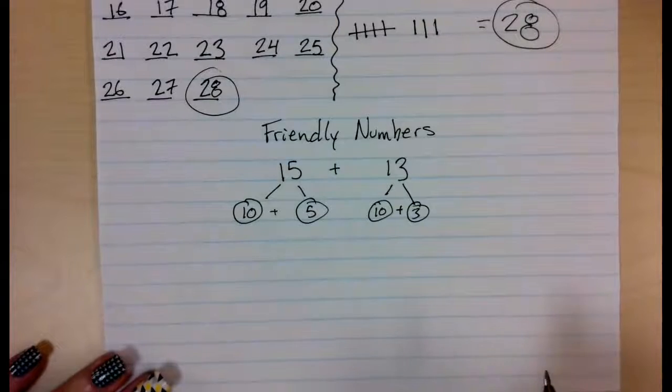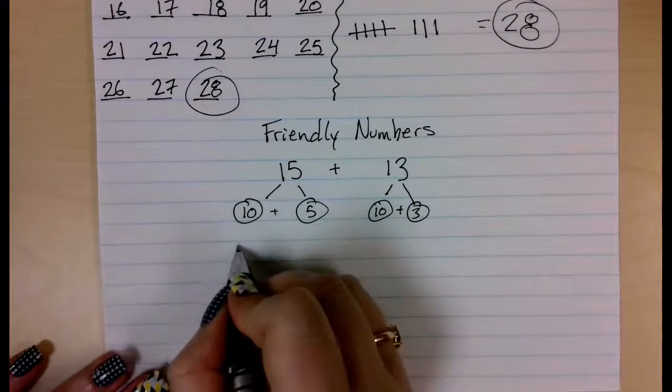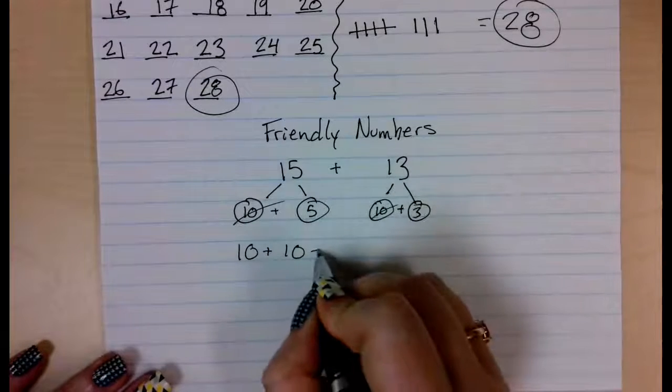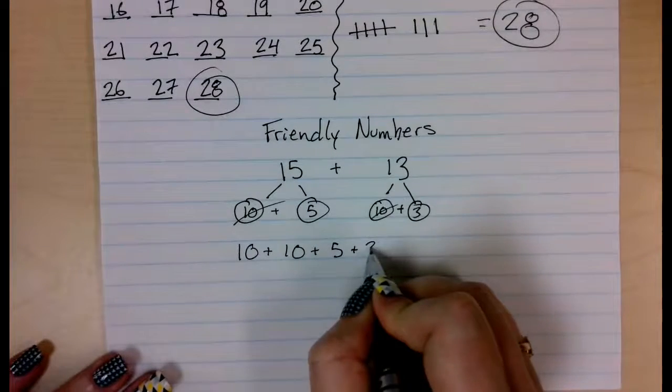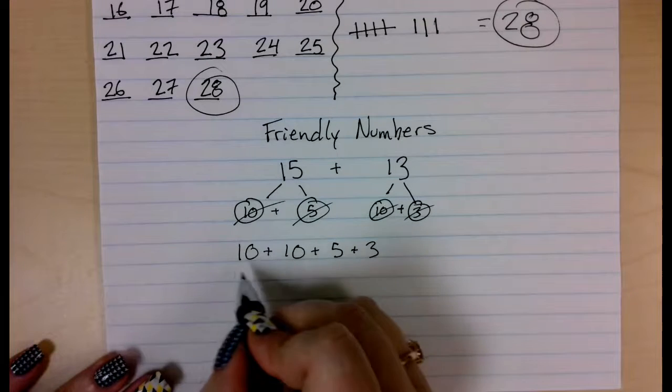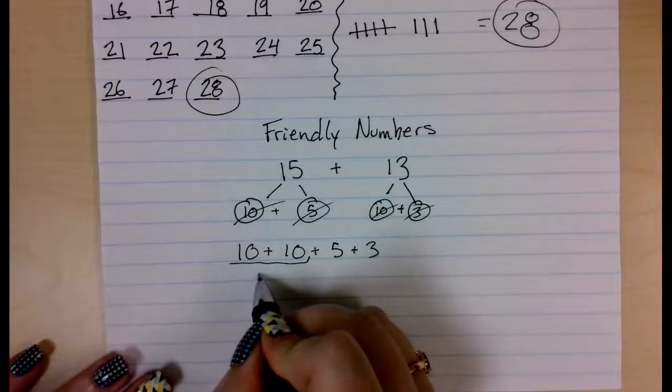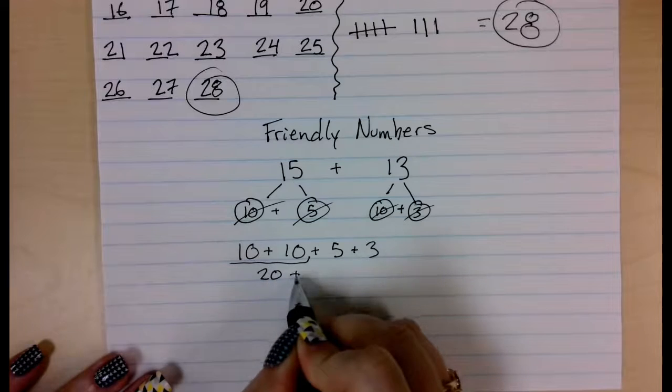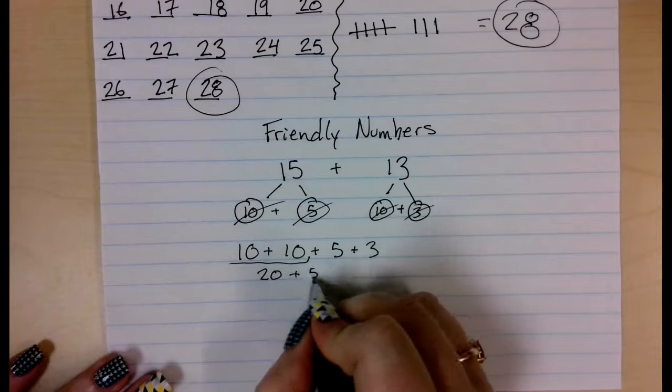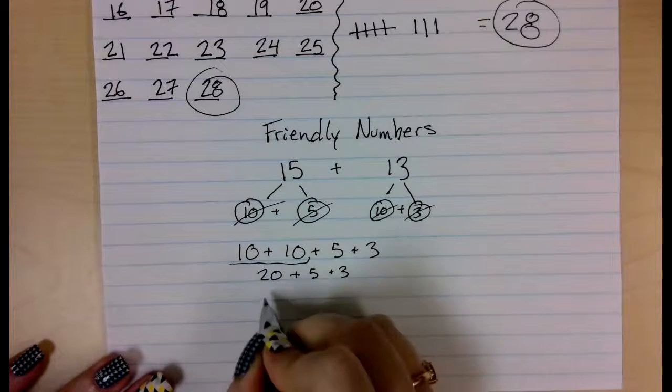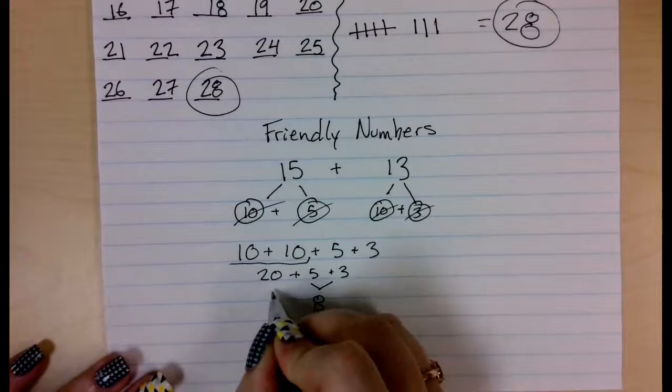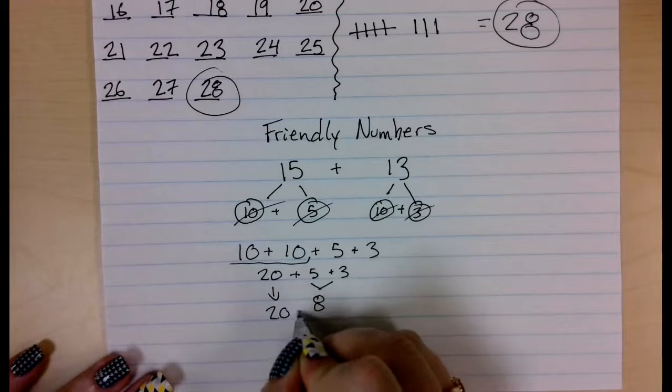Then I am going to gather my 10s, so I have 10 plus 10. I am going to gather my 1s, 5 plus 3, and now I can work on adding them together. So 10 plus 10 is 20, and then I can add my 5 and my 3, and I could even join those together. So 5 and 3 is 8. 20 plus 8 is 28.